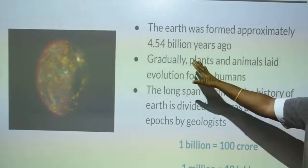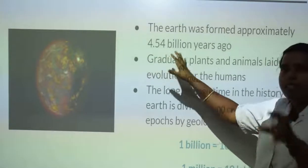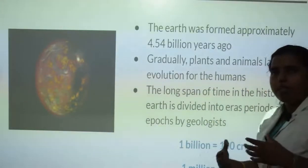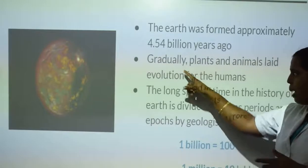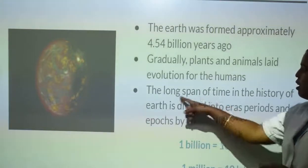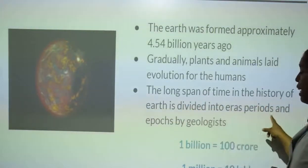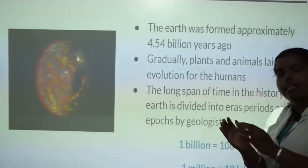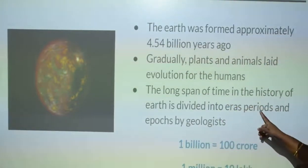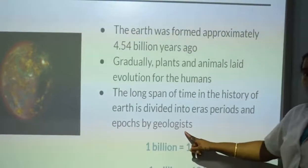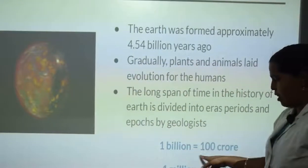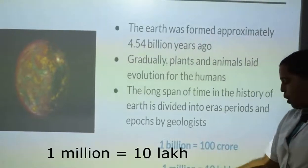The earth was formed approximately 4.54 billion years ago. Gradually, some chemical changes happened, and plants and animals evolved. Humans also evolved from the apes. Then, the long span of time - the history of earth - is divided into eras, periods, and epochs by geologists. Geologists are those who study about the earth and the earth's crust. The measurement: 1 billion is equal to 100 crore, and 1 million is equal to 10 lakh.